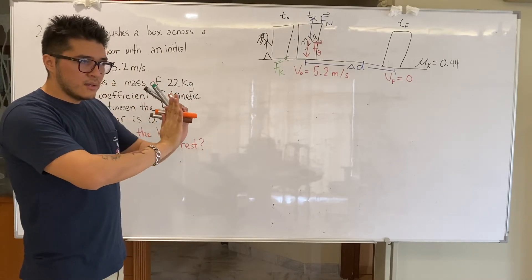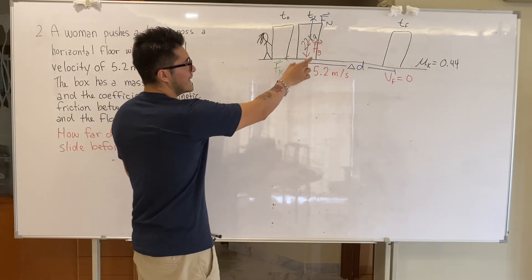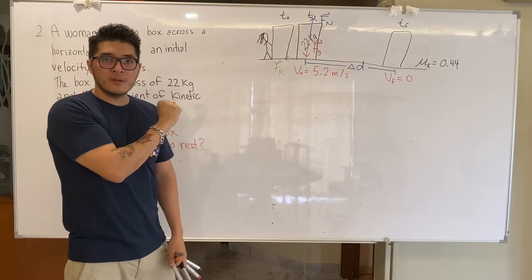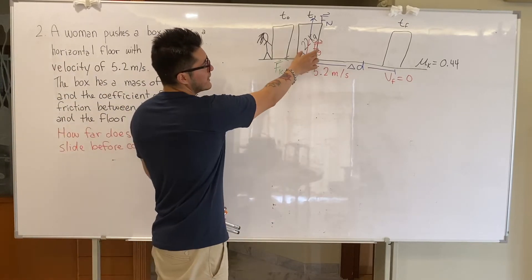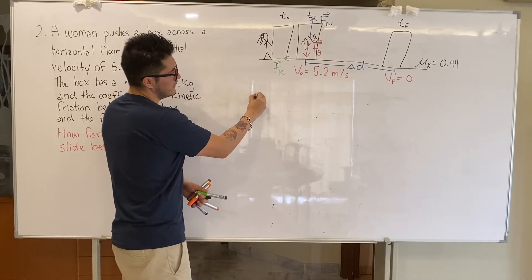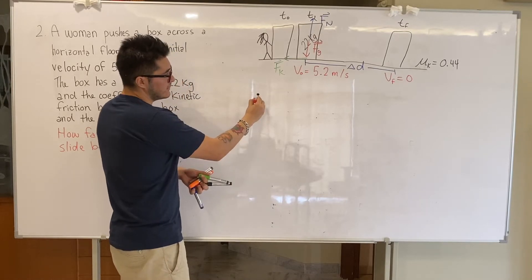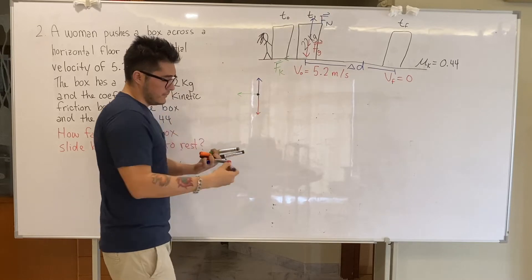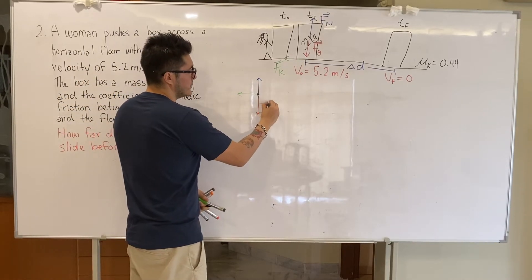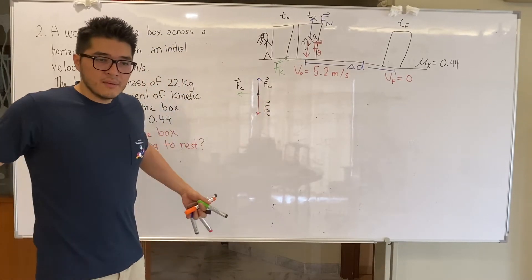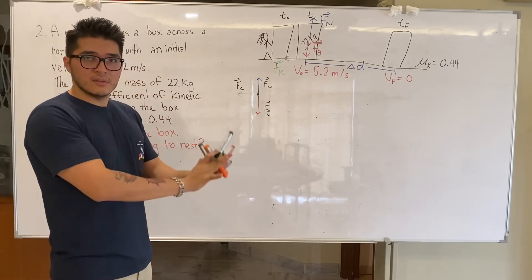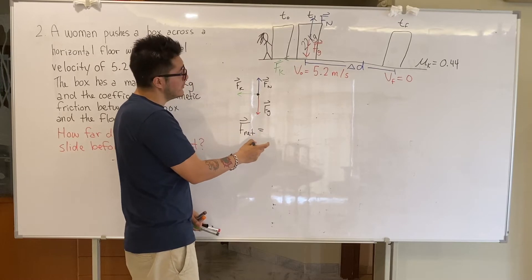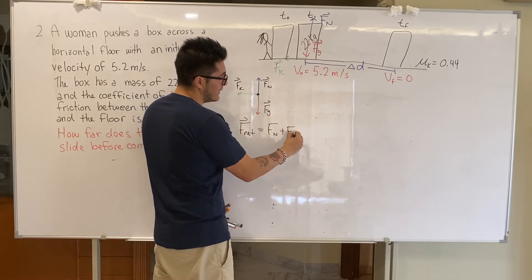The moment she no longer touches the block, there is no longer any applied force. The applied force only acts while you're making contact with an object — once you stop making contact, that force no longer acts on the object. So in this case there are only three forces at play. To simplify our drawing, let's treat the box as a single point. We have the force of gravity downward, friction to the left, and normal force upward. There is no applied force because she's no longer touching it — she pushed it and it kept moving.